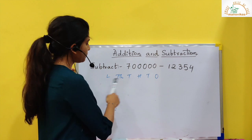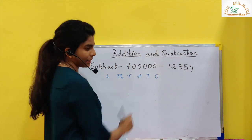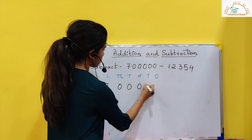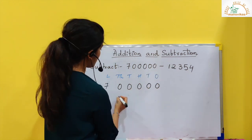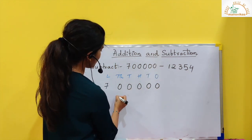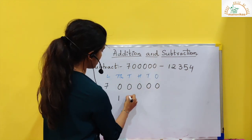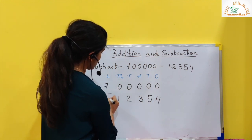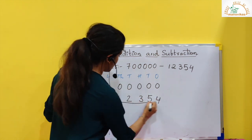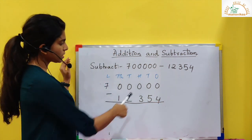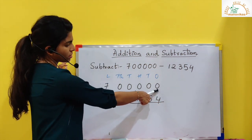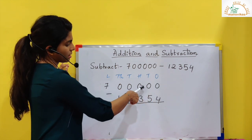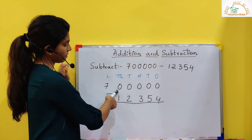Now let's learn how to do subtraction with zeros. I have put the number and the place values. So 7, 0, 0, 0, 0, 0, 0 minus 1, 2, 3, 5, 4. Now if you see here, we have zeros — we do not have 1s, 10s, 100s, 1000, 10,000. We have 7 lakhs.